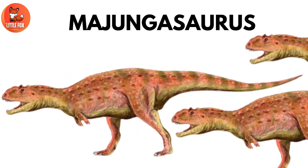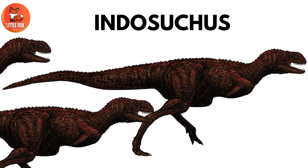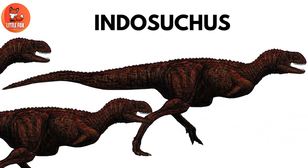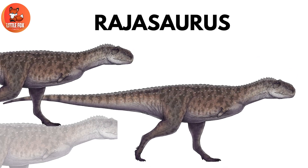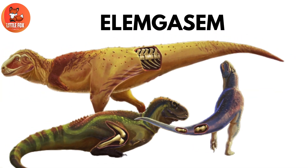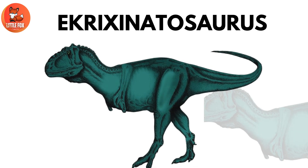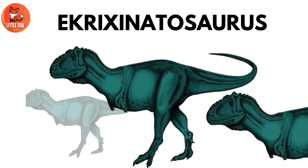Number 16: Majungasaurus. Number 17: Endosuchas. Number 18: Rajasaurus. Number 19: Elamgasum.